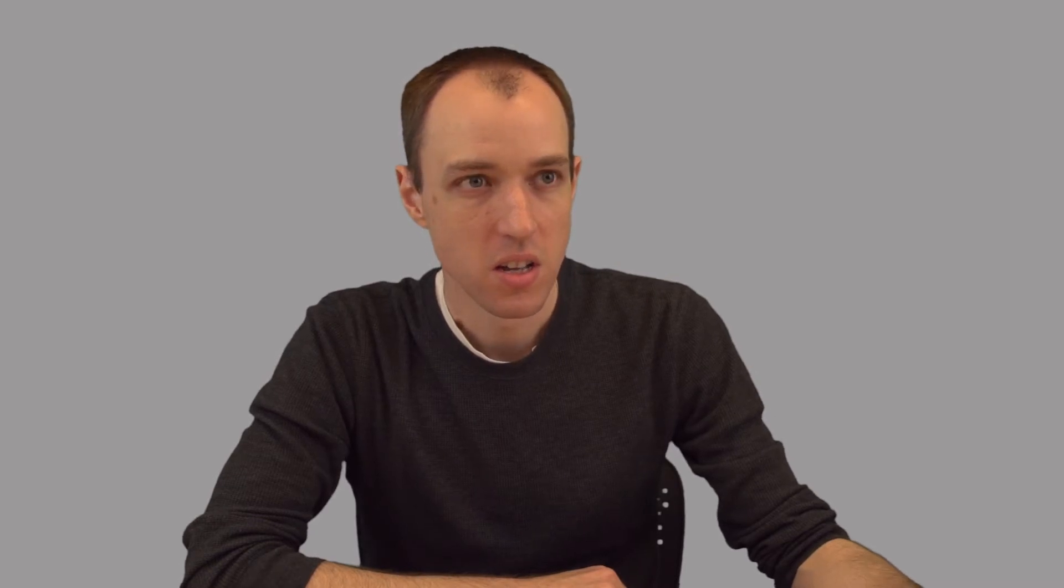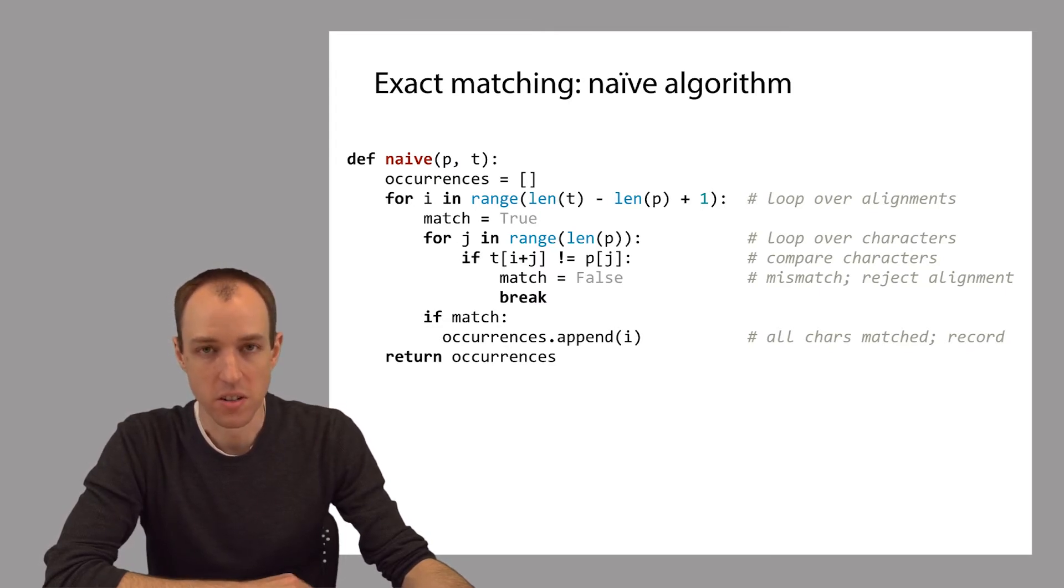Here's an implementation of that idea in Python. This function is called naive, because this algorithm is sometimes called the naive exact matching algorithm. It takes two arguments, the pattern P and the text T. We will initialize a list occurrences to be empty. It's an empty list at first. We'll eventually fill it with all of the offsets where P matches T.